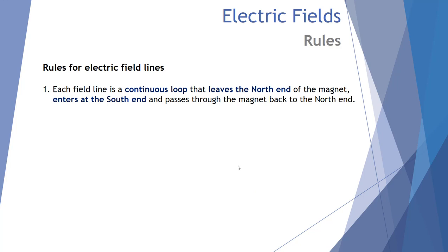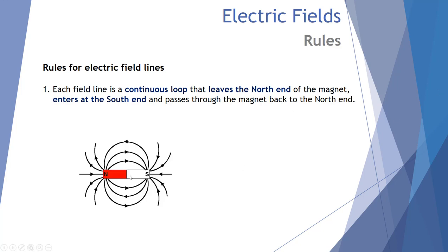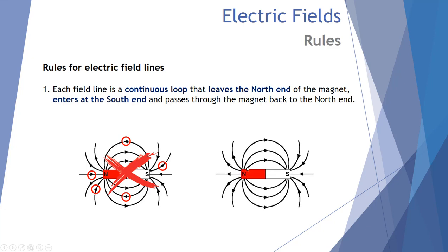Let's look at four rules for drawing magnetic field lines. The first is that each field line is a continuous loop — they leave the north end of a magnet and enter the south end, for any magnet, and pass through the magnet back to the north end. In the diagram shown there are five errors where field lines go from south to north rather than north to south. In the correct diagram, every field line leaves the north pole and ends at the south, always travelling from north to south.